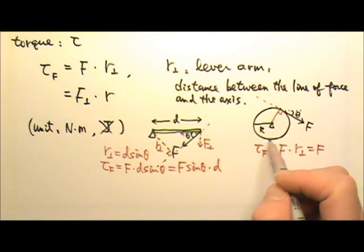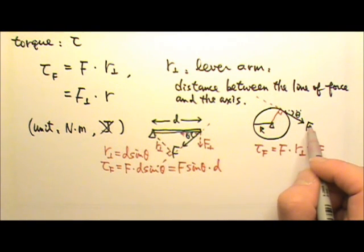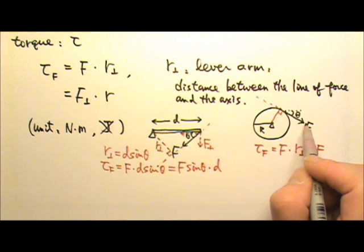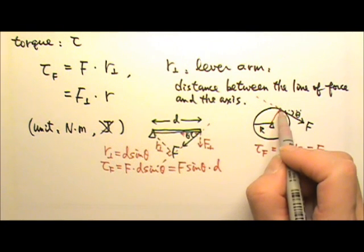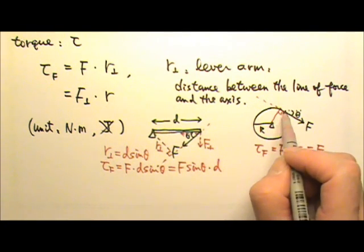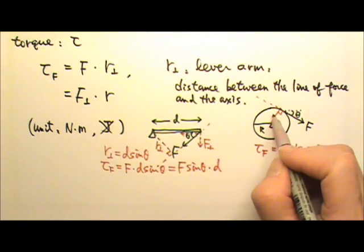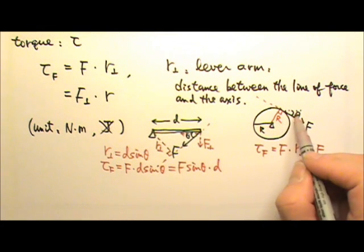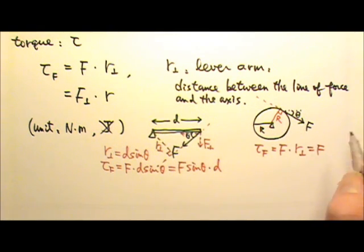Because the string gets pulled out of the wheel, that means that this line must be tangent to the circle, which is perpendicular to the radius. So the lever arm is R, which means it doesn't have anything to do with that angle. We don't need that angle at all, so the torque is F times R.